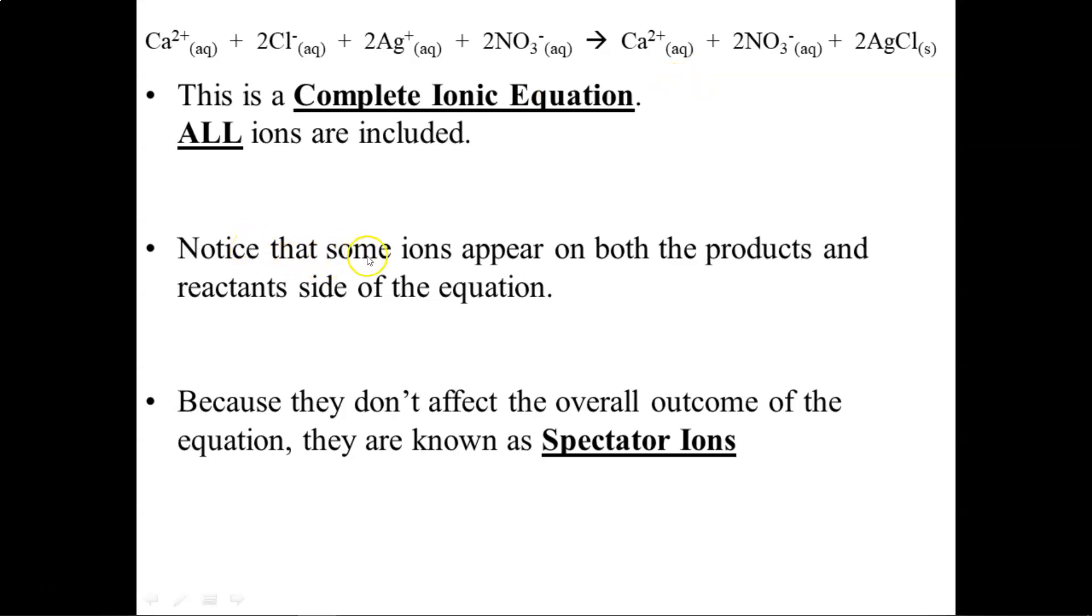Now if you look carefully, you'll notice that some ions appear on both the products and the reactant side of the equation. For instance, we start off with calcium ions and we end up with calcium ions. The calcium ions don't seem to have changed. The same goes for the nitrate ions. We start off with two of them and we end up with two of them. Nothing has happened to them during the chemical reaction.